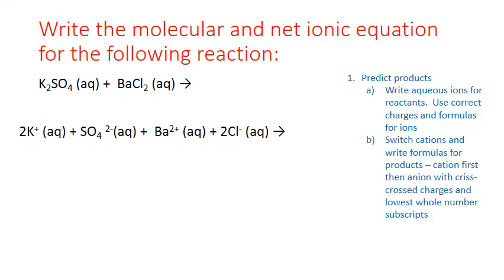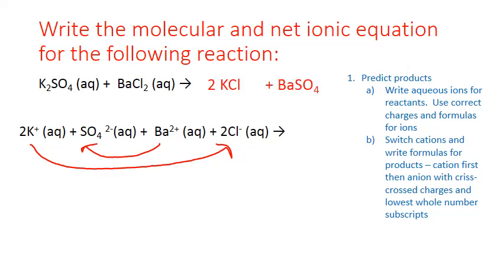Next, switch the cations to write product formulas: potassium combines with chloride, and barium combines with sulfate. When writing ionic compound formulas, the cation comes first followed by the anion, using the lowest whole-number ratio. Potassium chloride is K⁺ and Cl⁻ (+1/−1), giving KCl. Barium sulfate is Ba²⁺ and SO₄²⁻ (+2/−2), combining in a 1:1 ratio to give BaSO₄. The coefficient of 2 carries over from the two potassiums and two chlorides.